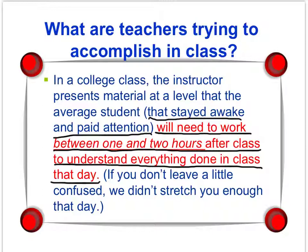The only time you should be concerned is if it takes you more than that one to two hours to figure out what was done in class. If you find it's taking you three, four, five hours to make sense of what was done in one class, then there's a disconnect between your understanding and what the faculty member is presenting. But if you can figure it out in one to two hours, things are going the way they're supposed to.